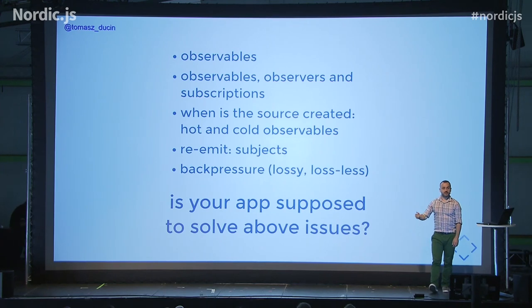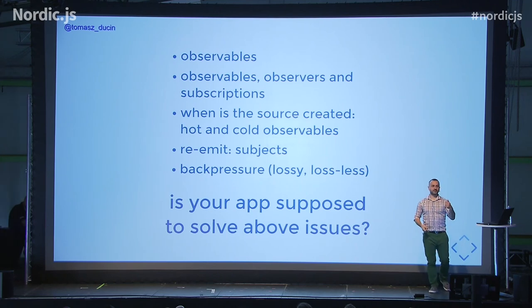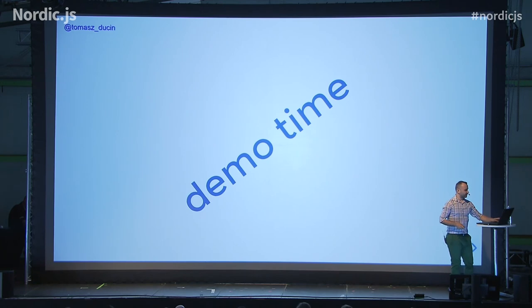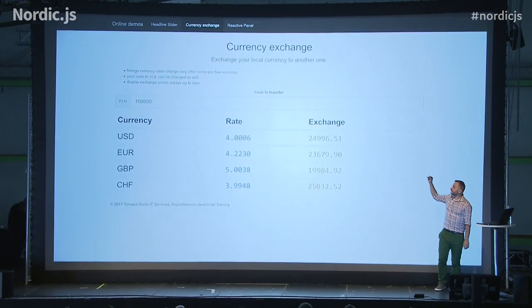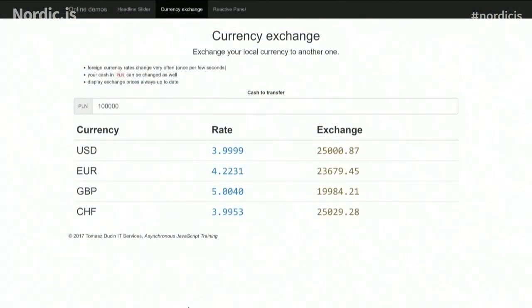I encourage you to look at the surrounding world and try to see all the streams around. The most important question is whether your app really needs to handle subjects, back pressure, hot and cold observables. If it does, RxJS is a perfect match. But if you just shoot simple Ajax requests and listen to objects emitting events, this might be overkill. Here's a simple demo application with an input for an amount of money to exchange to four foreign currencies, receiving real-time notifications whenever a currency rate changes.